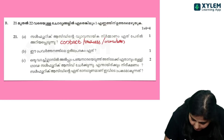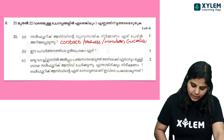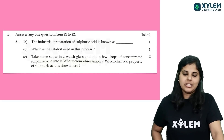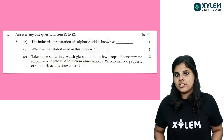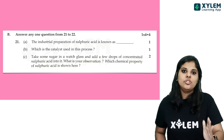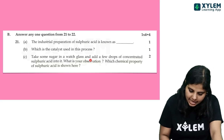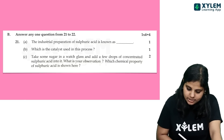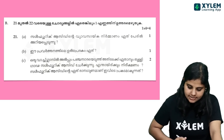Which is the catalyst used in this process? Vanadium pentoxide is used in this process. Next question: Take some sugar in a watch glass and add a few drops of concentrated sulfuric acid into it. What is your observation? Which chemical property of sulfuric acid is shown here?